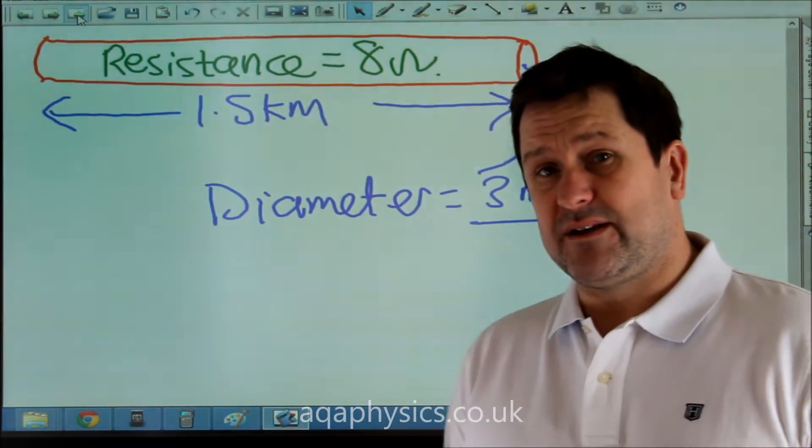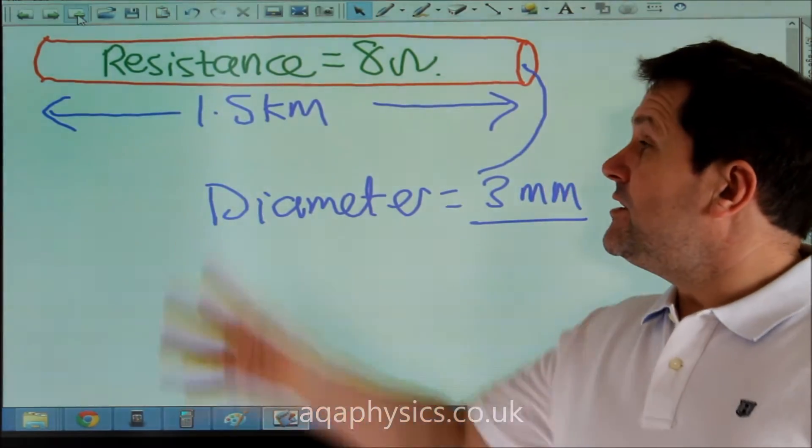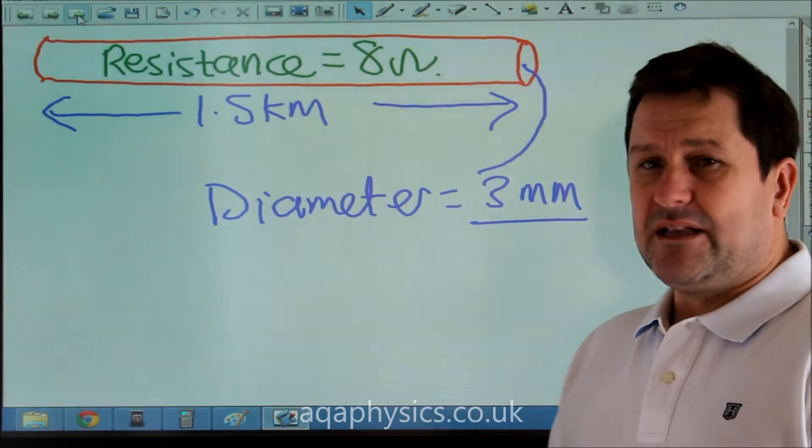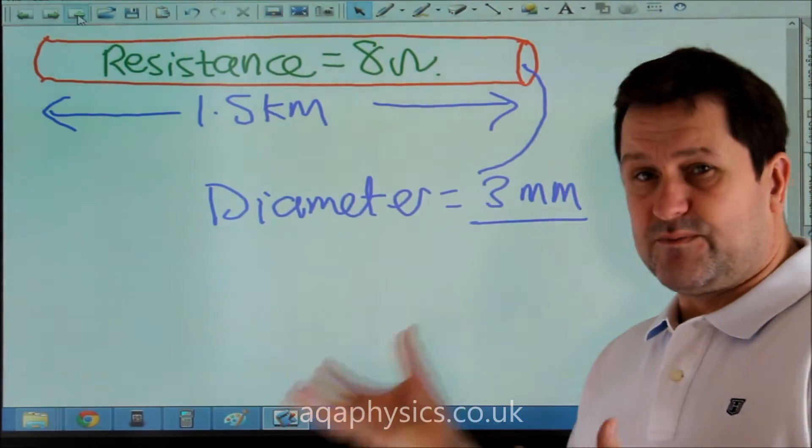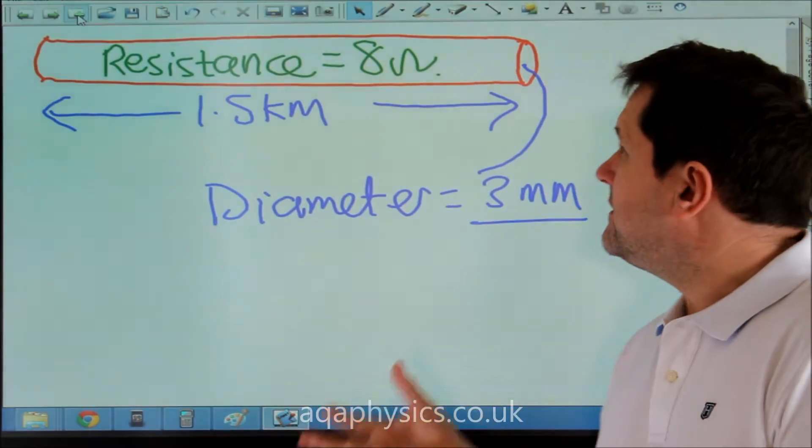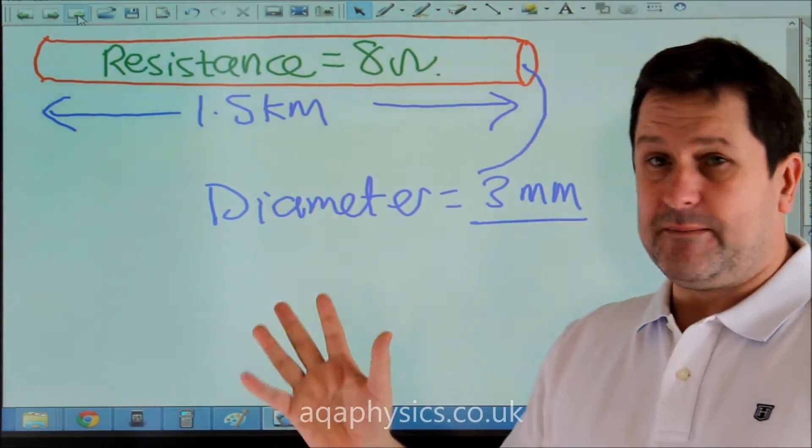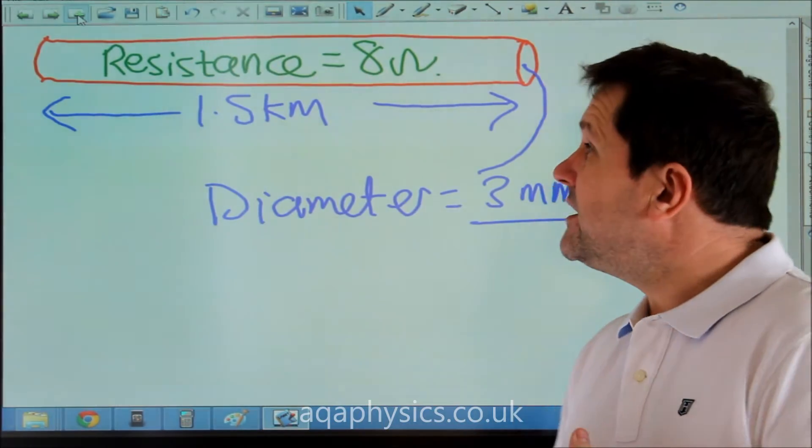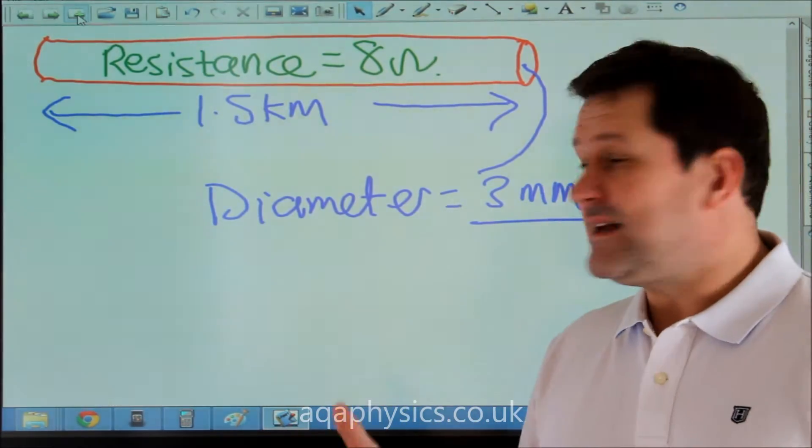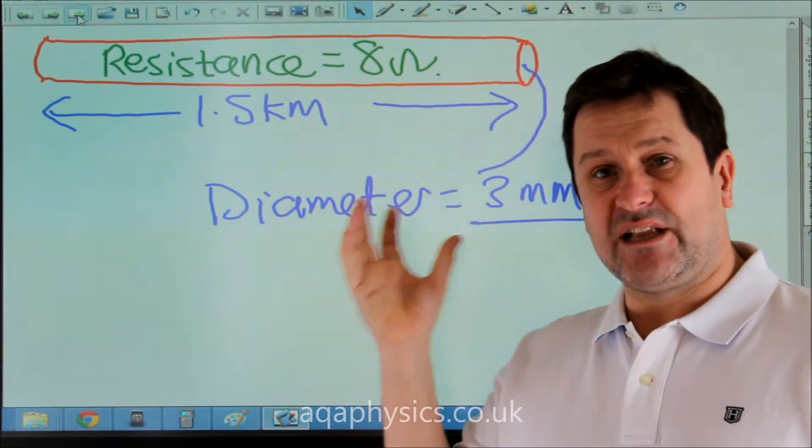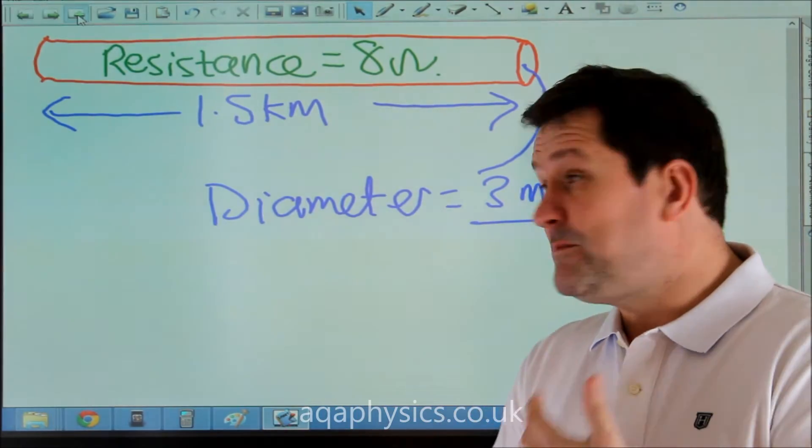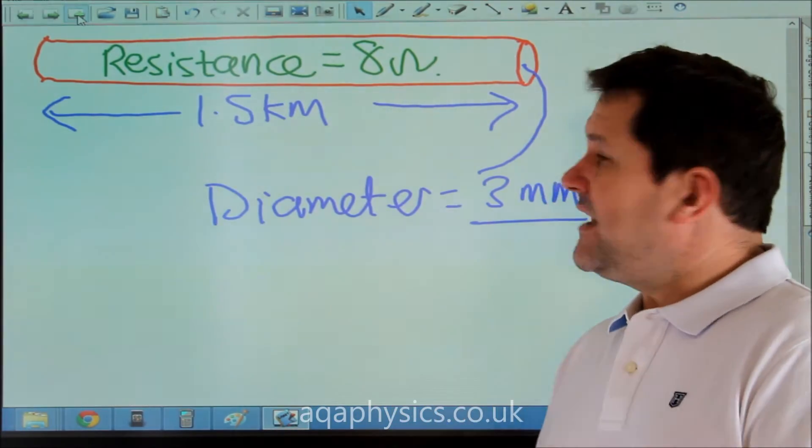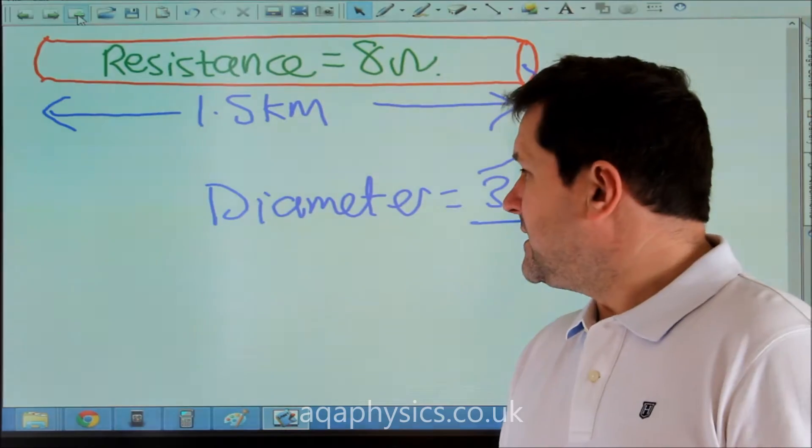What we're going to do is calculate the resistivity of this wire. Typically, the problems that arise with resistivity are to do with cross-sectional area of the wire. We've got a diameter in millimeters, and when we're using ρ = RA/L, it's working out our cross-sectional area. My advice would always be to work out your cross-sectional area before you do anything else. Then you can just apply your numbers.